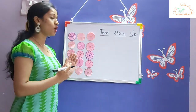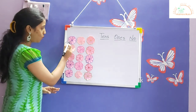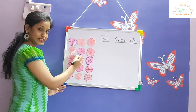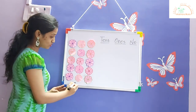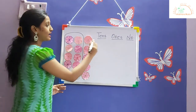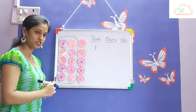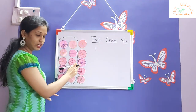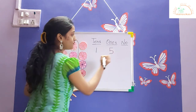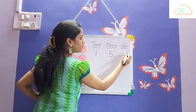Now let us make one more group of ten flowers and write the remaining flowers in the ones column. One, two, three, four, five, six, seven, eight, nine, ten. We got one bundle of ten flowers, so we write one ten in the tens column. The remaining flowers are one, two, three, four, five — that is five ones in the ones column. One ten and five ones makes fifteen.